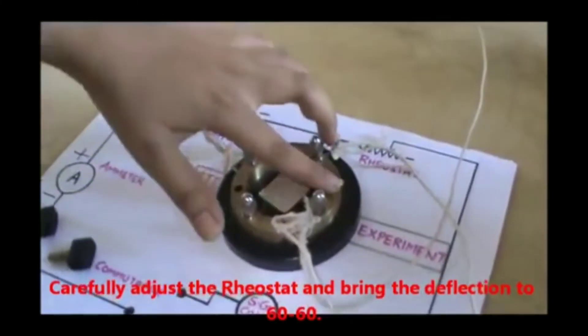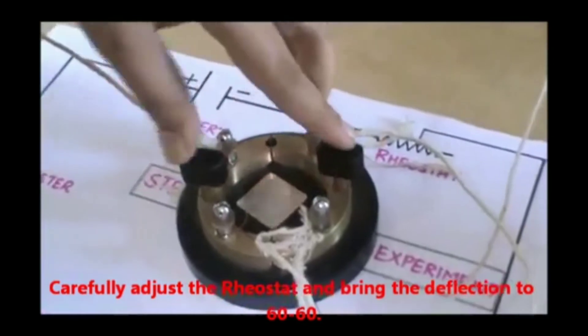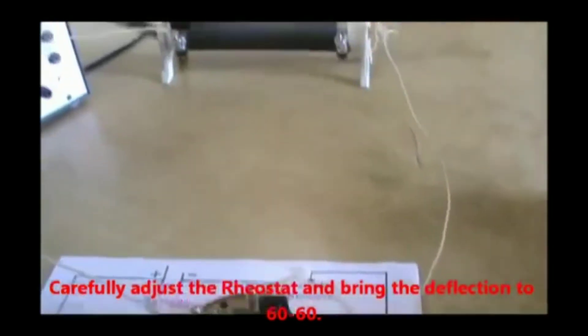Carefully adjust the rheostat and bring the deflections in the magnetic compass to 60-60.